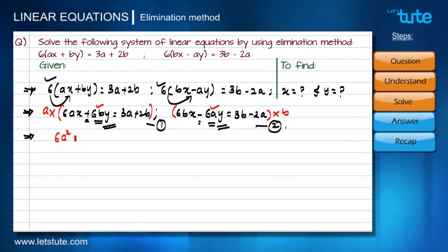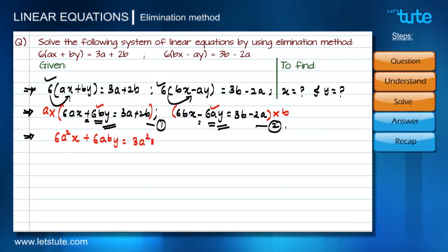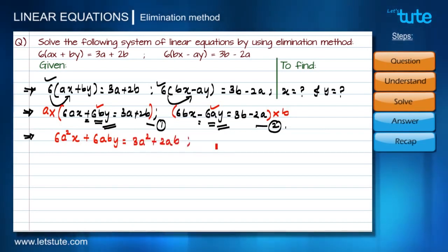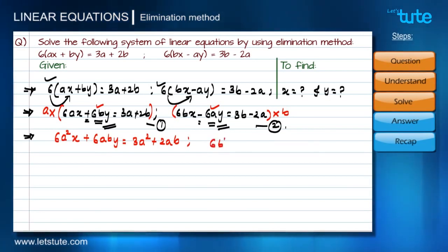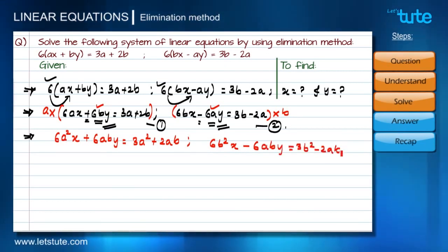To make the coefficients equal, I'll multiply equation one by a and equation two by b. Equation one becomes: six·a²x plus six·ab·y equals three·a² plus two·ab. After multiplying by b, equation two becomes: six·b²x minus six·ab·y equals three·b² minus two·ab.